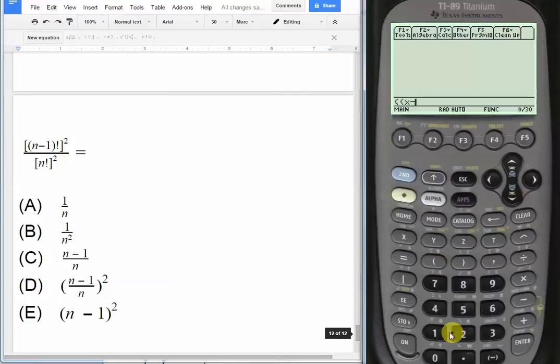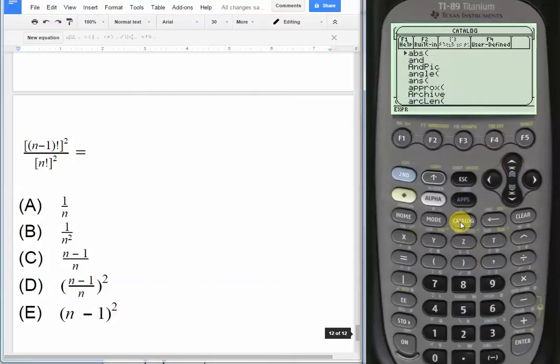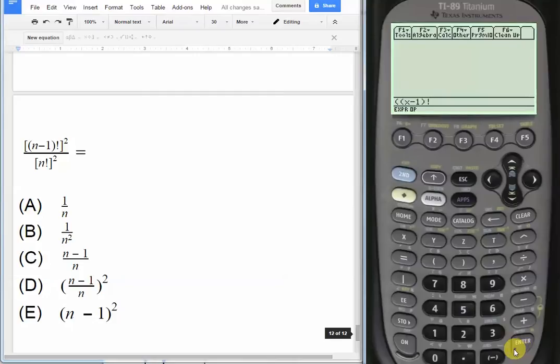And now our factorial key, you can find it in catalog, which will start in alphabetical order, it starts with a. We can just scroll up a little ways until we find the exclamation mark, right there is our factorial key. Push enter, all of that squared.